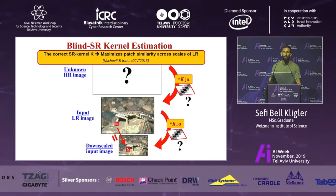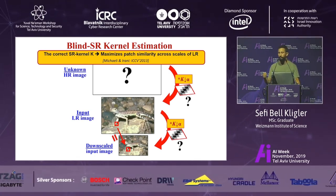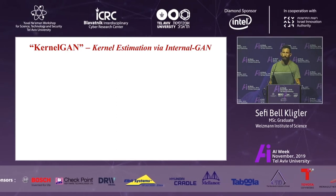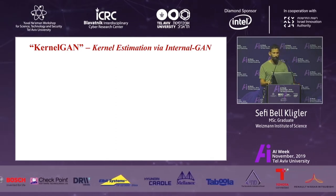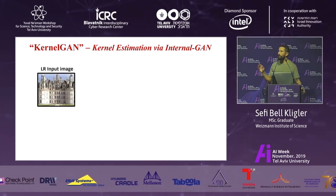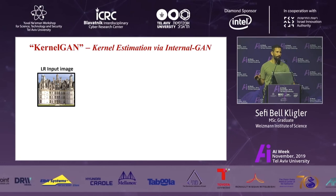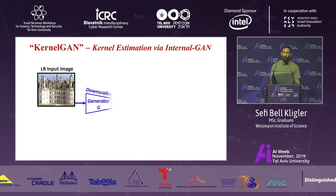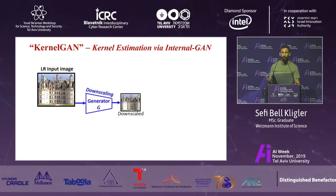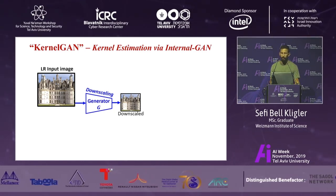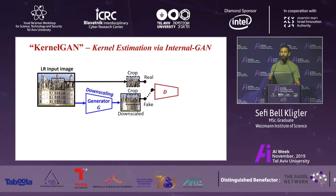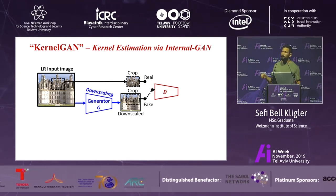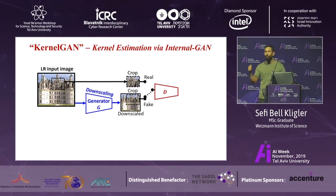Michaeli and Irani also provided an algorithm to estimate the kernel using an iterative optimization process. In KernelGAN, we estimate the kernel using an internal GAN. An internal GAN gets the input image as the only input — no large dataset of other images. The generator aims to downscale this image and fool the discriminator. After downscaling, we take crops from the generated image as fake crops, and crops from the real input image as real crops. The discriminator tries to distinguish between them.